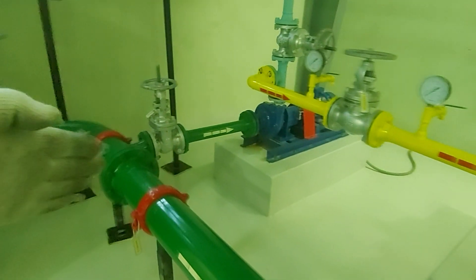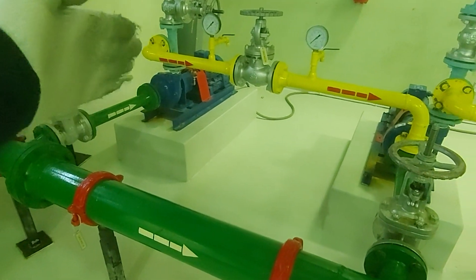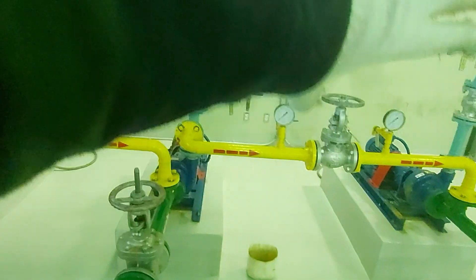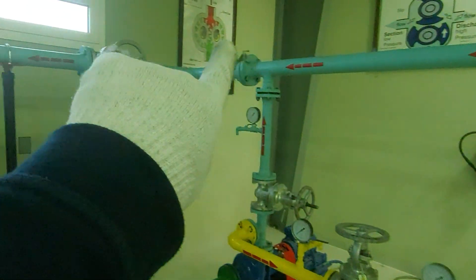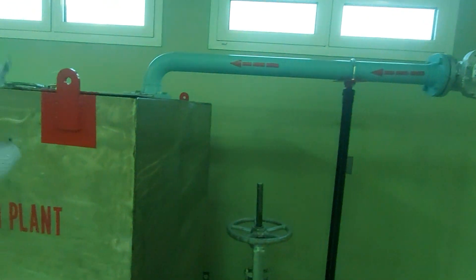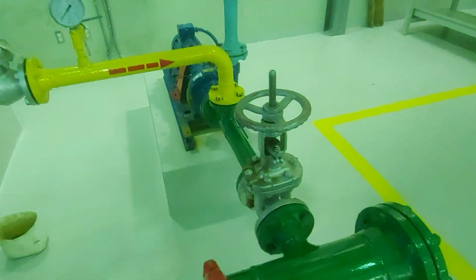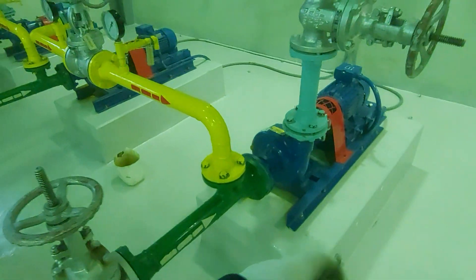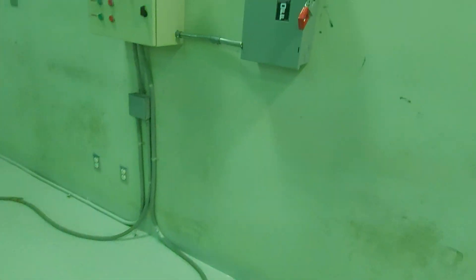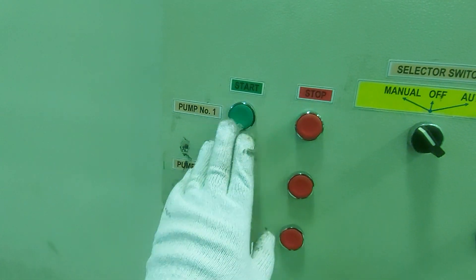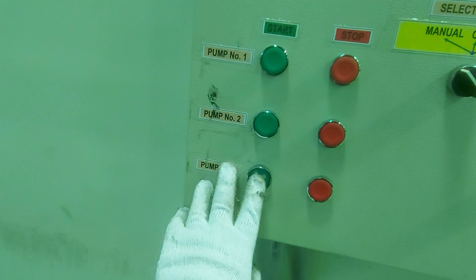What happens is that fluid goes here. Fluid goes. Fluid goes. And together, all of them, all the discharges collected in the main line and then discharges back. So, it will increase the flow rate and pressure will remain constant. Let's see. Manual. Pump one. Pump two. Pump three.